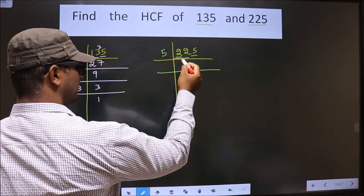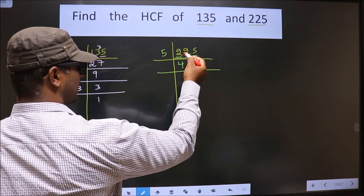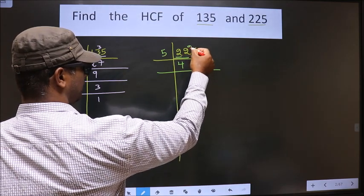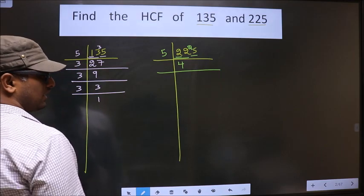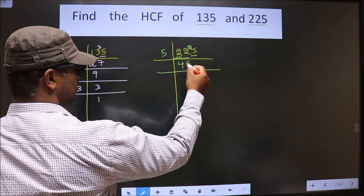So now, a number close to 22 in the 5 table is 5 times 4 is 20. 22 minus 20 is 2. 2 carried forward making it 25. Now, when do we get 25 in the 5 table? 5 times 5 is 25.